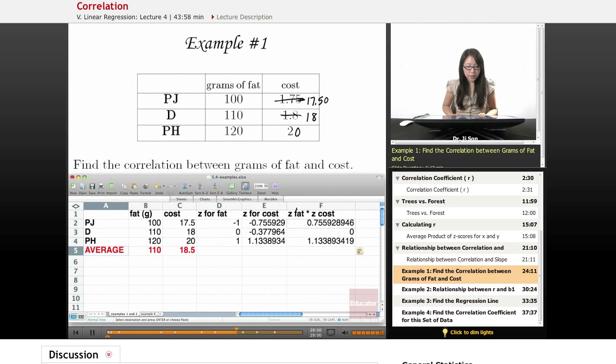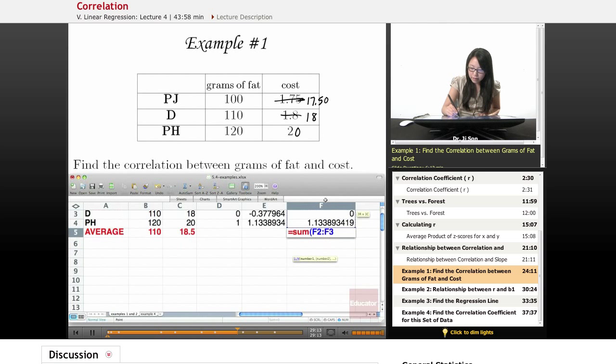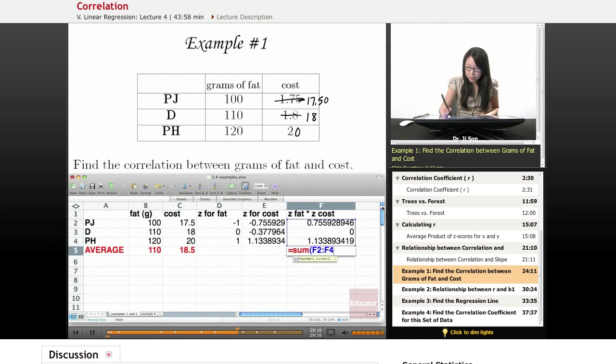Once we have that, we could just get the average all at once because we just put it all in one formula. We could just sum these together, and we want to divide by N minus 1. In this case it's 2. If you wanted to put in a formula, you could put in count minus 1, but I'm just going to put 2 here for our purposes.